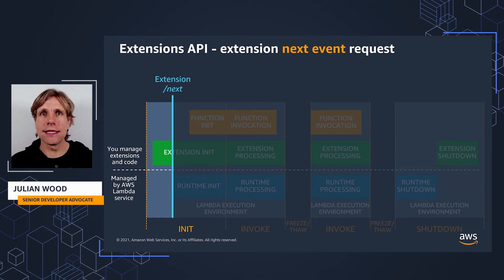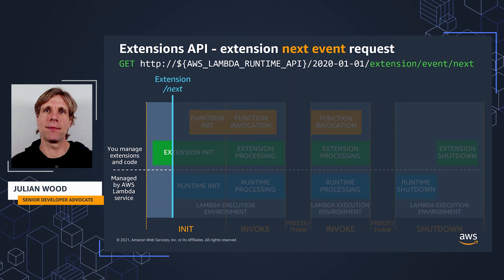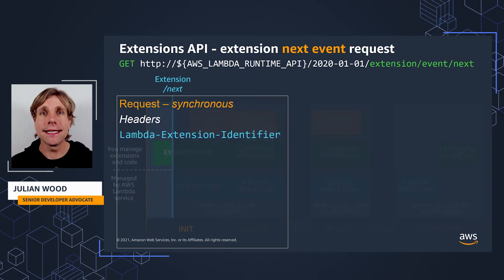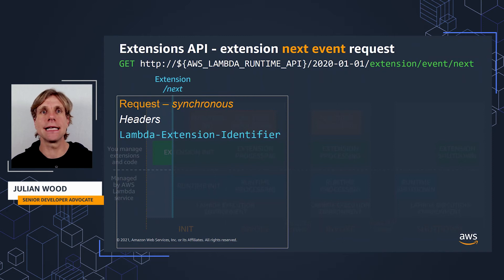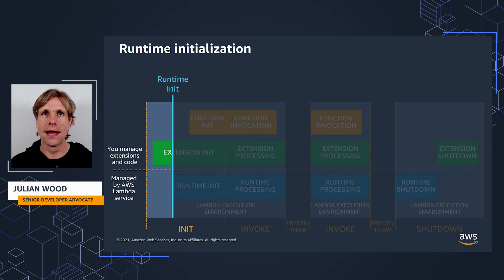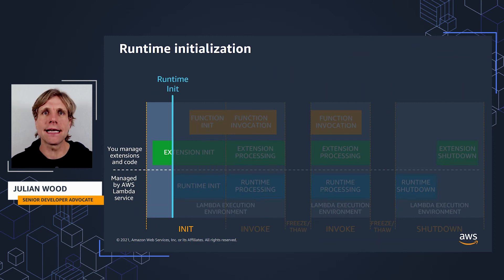The extension then signals it's finished init by sending a /next API request to receive the next event. This is a synchronous blocking call to Lambda, so it only receives a response when an invoke or shutdown event comes from Lambda. In parallel to the extension's init, the runtime also initializes.